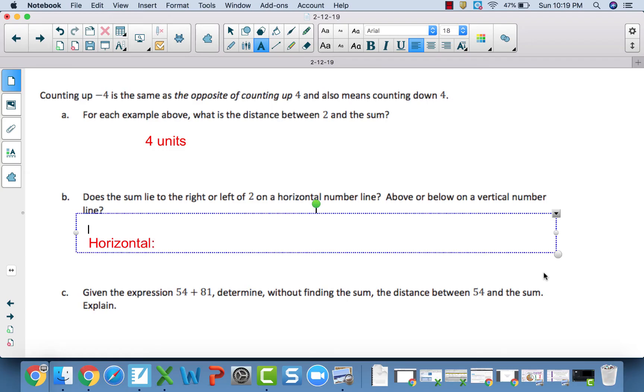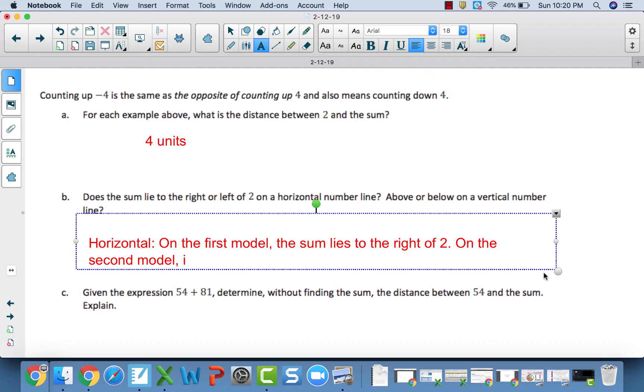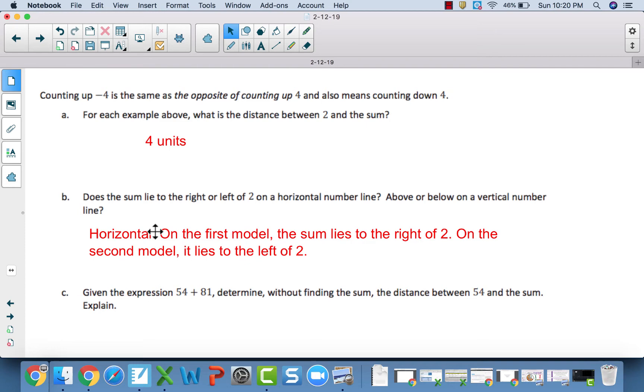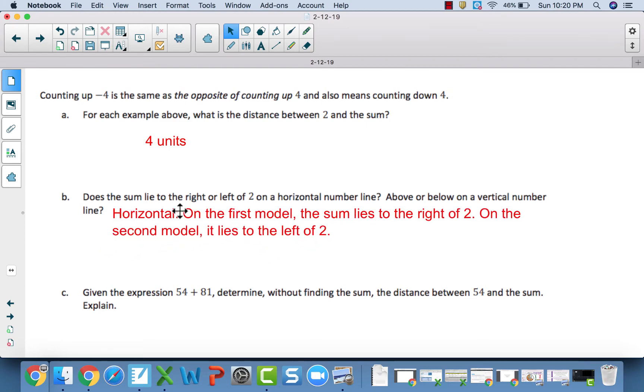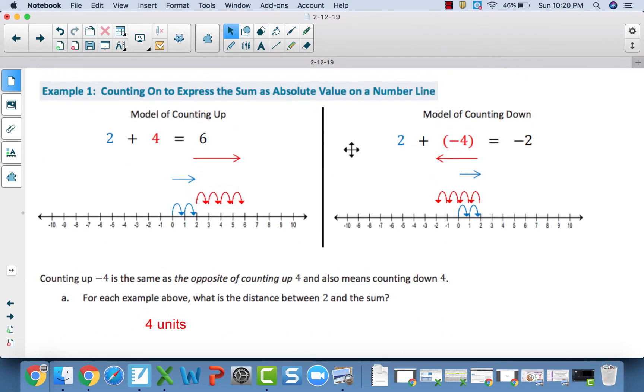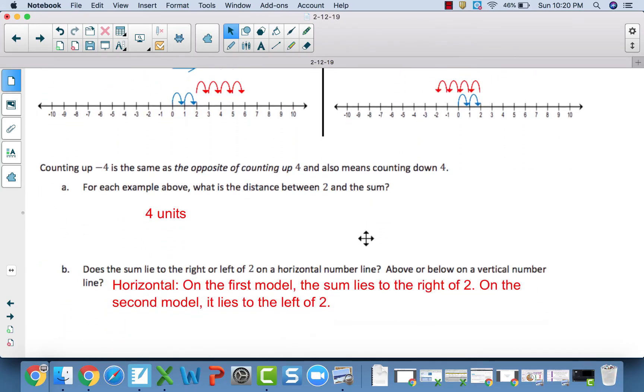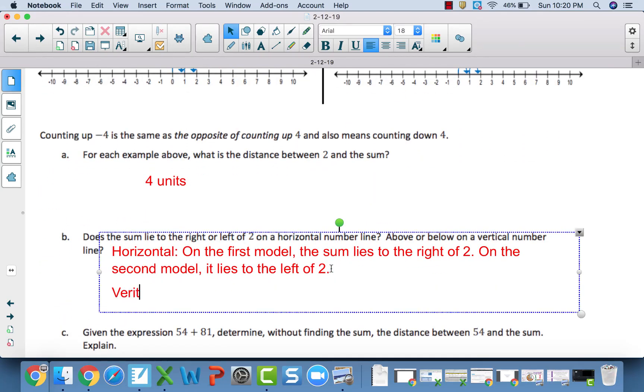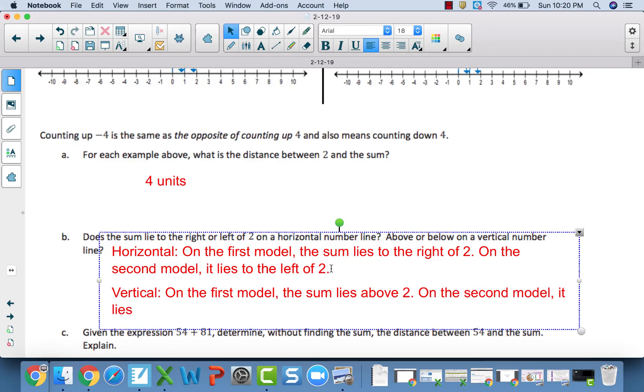So let's start with the horizontal. On the first model, the sum lies to the right of 2. On the second model, it lies to the left of 2. All right, so it's different depending on our expression, right? But regardless, it is 4 units away. Now, let's look at our vertical. On the first model, the sum lies above 2. On the second model, it lies below 2.